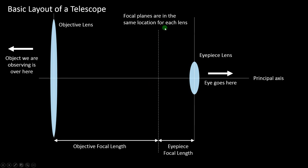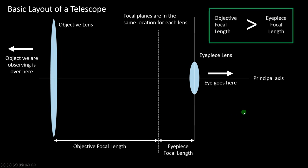The focal planes for each lens are in the same location. The objective focal length and the eyepiece focal length are shown here, and the two lenses are separated by the sum of those distances, meaning both focal planes lie in the same plane. To get a working telescope, we need the objective focal length to be longer than the eyepiece focal length.